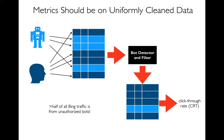Another thing you have to be careful about is figuring out what traffic you're actually looking at. We've talked a little bit about tracing applications like in Flask — how can I log different events? I could do A/B analysis studies based on those traces. But not every visit to my website might be a human. There are all these bots that are scraping websites. For Bing, for example, over half of all their traffic is from unauthorized bots. So before you run any metrics, try to filter out the non-humans, otherwise you're just measuring garbage.